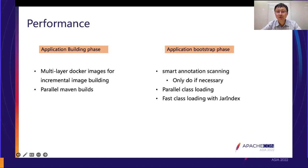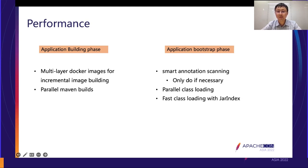In the application bootstrap phase, we perform smart annotation scanning. Since Servlet 3, Tomcat scans annotations like @WebServlet and @WebListener. But if we know an application has none of these annotations, Tomcat will still scan — which is wasteful. So we added a flag to disable such scanning. While this doesn't strictly follow the spec, we found it very useful since most applications don't use those annotations.